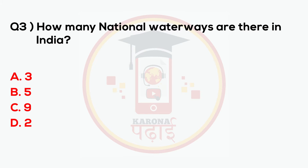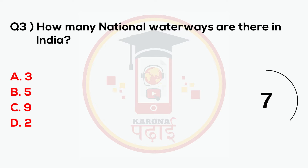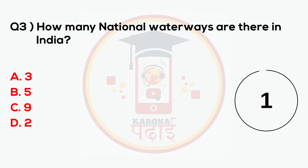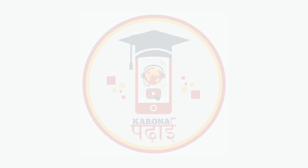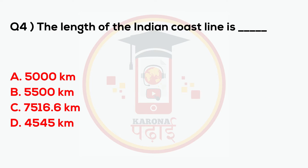How many national waterways are there in India? 9. The length of the Indian coastline is blank.